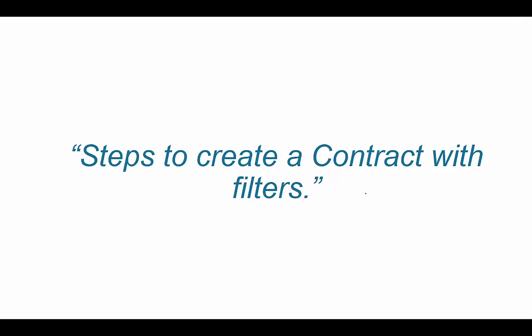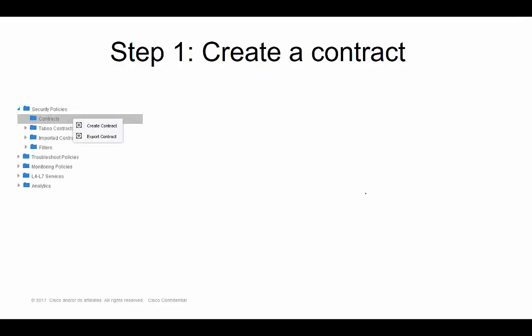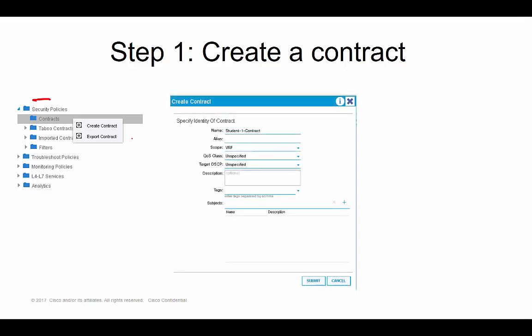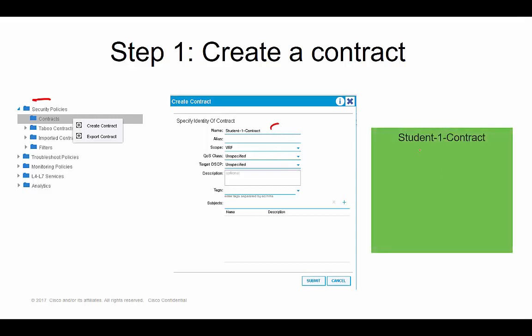I'm going to show you step by step how to create contracts. You do subjects, then create your filters, then apply the contract. Step one: you simply create the contract. I'm within the tenant here, right-clicking security policies. This screen pops up, and that's it — you simply create the contract.